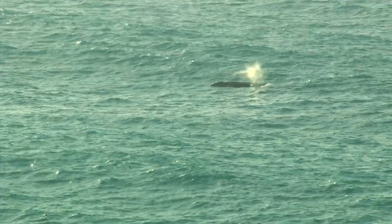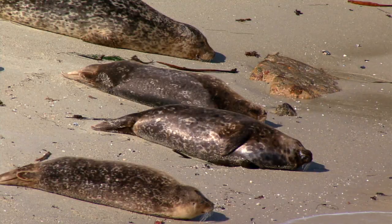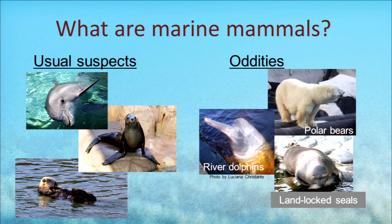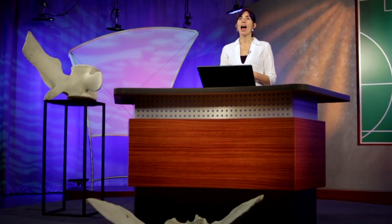Now let's take a look at who our marine mammals are. When you think about marine mammals, you probably think of whales and dolphins, seals and sea lions, and maybe even sea otters — those are the usual suspects. What I mean by that are mammals that live in the marine environment. To be marine means to be oceanic, so these are mammals we find in the ocean. But that's not the best definition from a biological standpoint, because there are actually some exceptions or oddities to that rule.